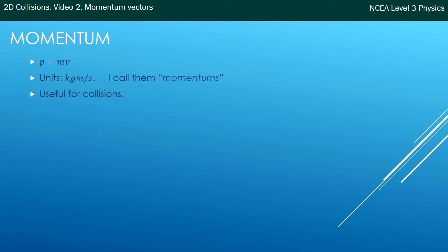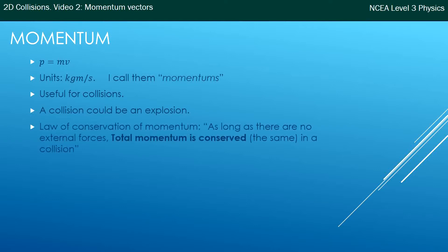Momentum is very useful for collisions at predicting speeds after collisions, but a collision might not just be two objects that come together to collide. It could be one object that has an explosion and separates into a number of objects.